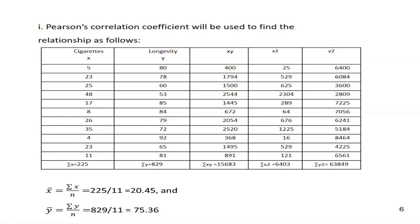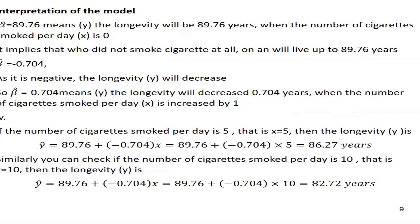This is the magic of the regression model — this is called prediction. You can make predictions from the regression for any value of x. That value should be realistic: you cannot give 200 cigarettes per day, and you cannot give a negative value. For real values, you can estimate the value of y — longevity. This is the beauty of regression line and regression analysis.